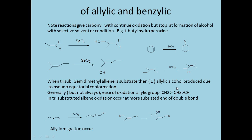CH₂ is the most oxidizable group. As an example using CD labeling, CH₂ is preferentially converted to the alcohol group. The next rule is that for trisubstituted alkenes, oxidation occurs at the more substituted end of the double bond.